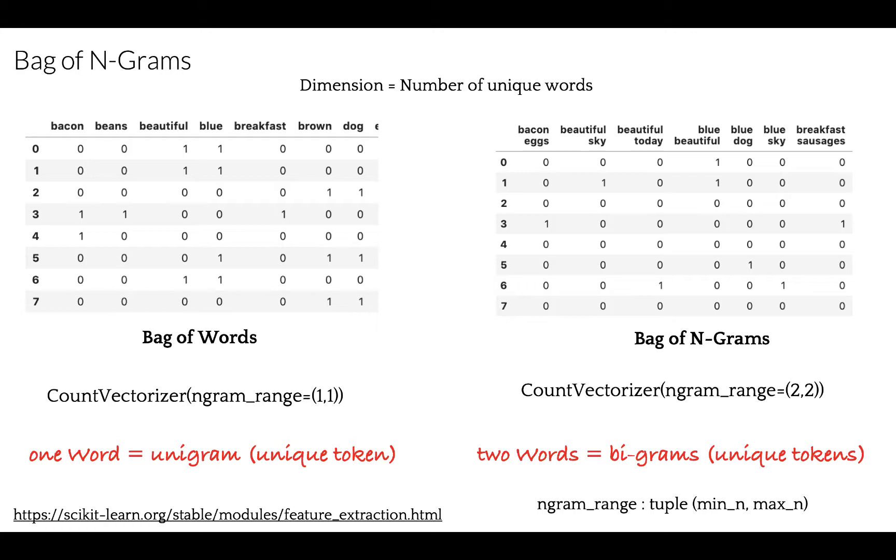You can set n-gram range parameter in our class CountVectorizer to output bigrams. In fact, n-gram range allows us to set minimum and maximum range. It will be tupled with minimum and maximum range to be extracted, so it can have a different lower and upper boundary.